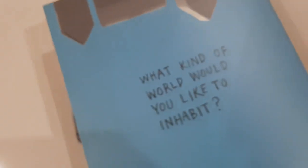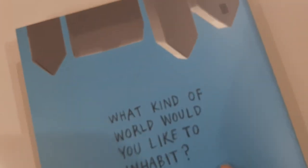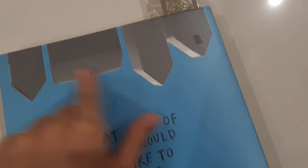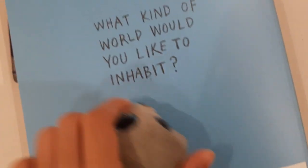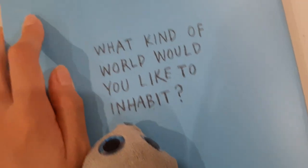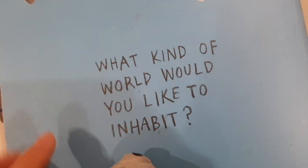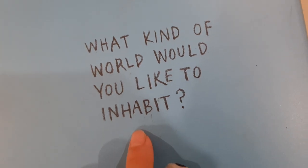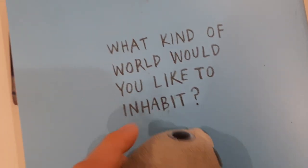We haven't looked at the back yet. It shows these upside down houses and just some book barcode. And it says, 'What kind of world would you like to inhabit?' So now let's go to the page we left off.